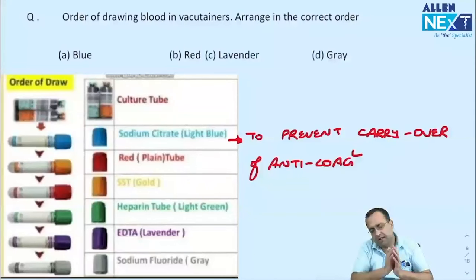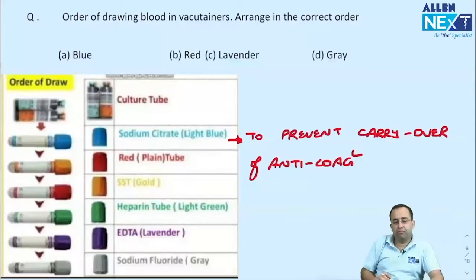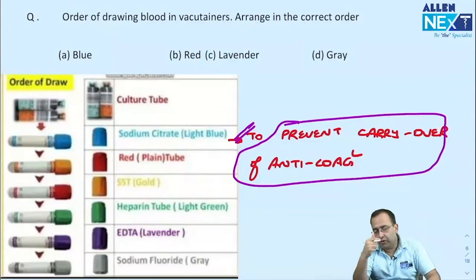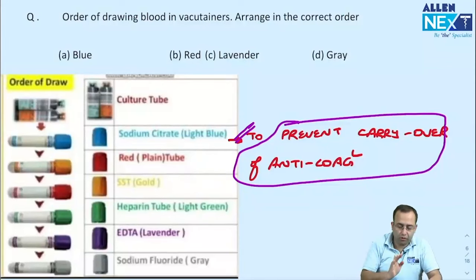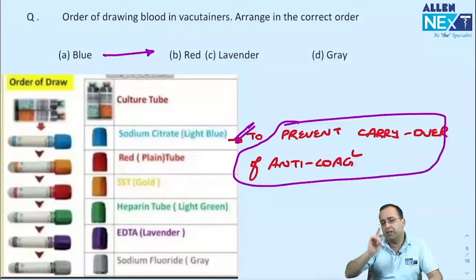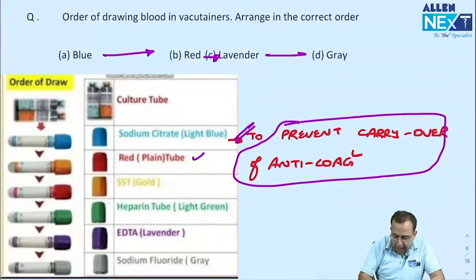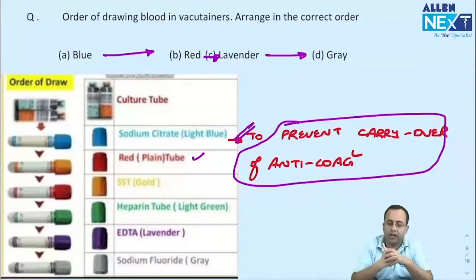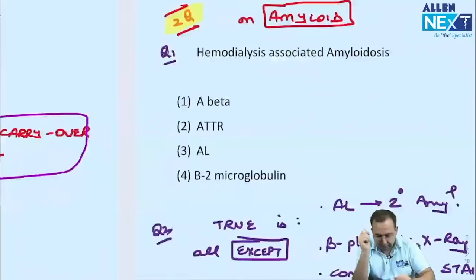Order of drawing blood in vacutainer — to prevent carryover of anticoagulant. The order is: first culture tube (no contamination), then blue (sodium citrate), then red (plain tube), then lavender (EDTA), and lastly gray (sodium fluoride and oxalate — for glucose). So the order is culture, blue, red, lavender, gray.